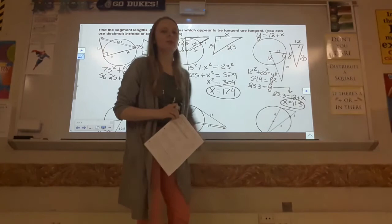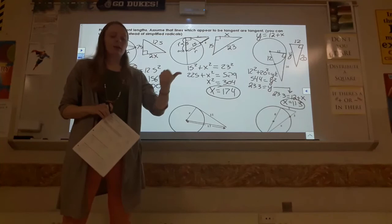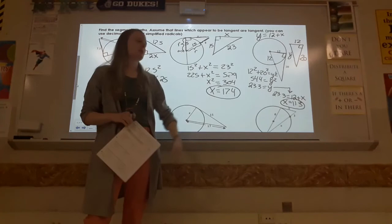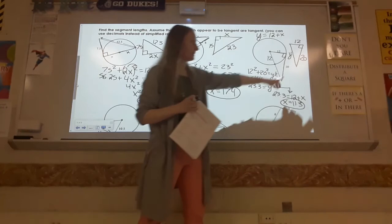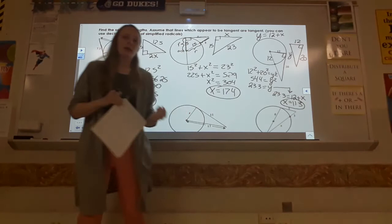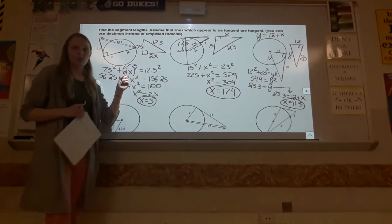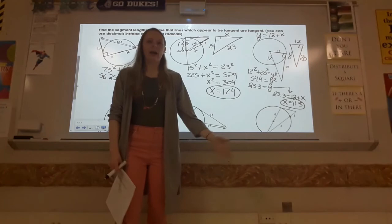So any time one of your sides is a variable and a number added together, you want to use a stand-in variable. Otherwise you're going to be stuck foiling. Because if you try to square something like (12 plus x), you need to foil, not distribute. We're able to distribute for these ones because that's multiplication, not addition. So just remember to do this process instead.